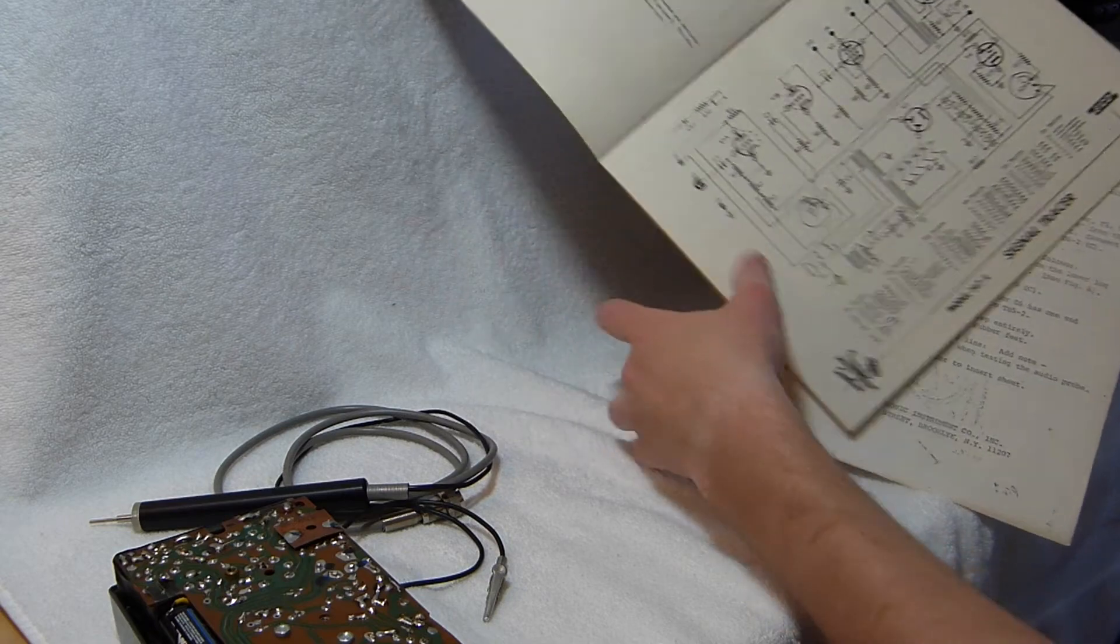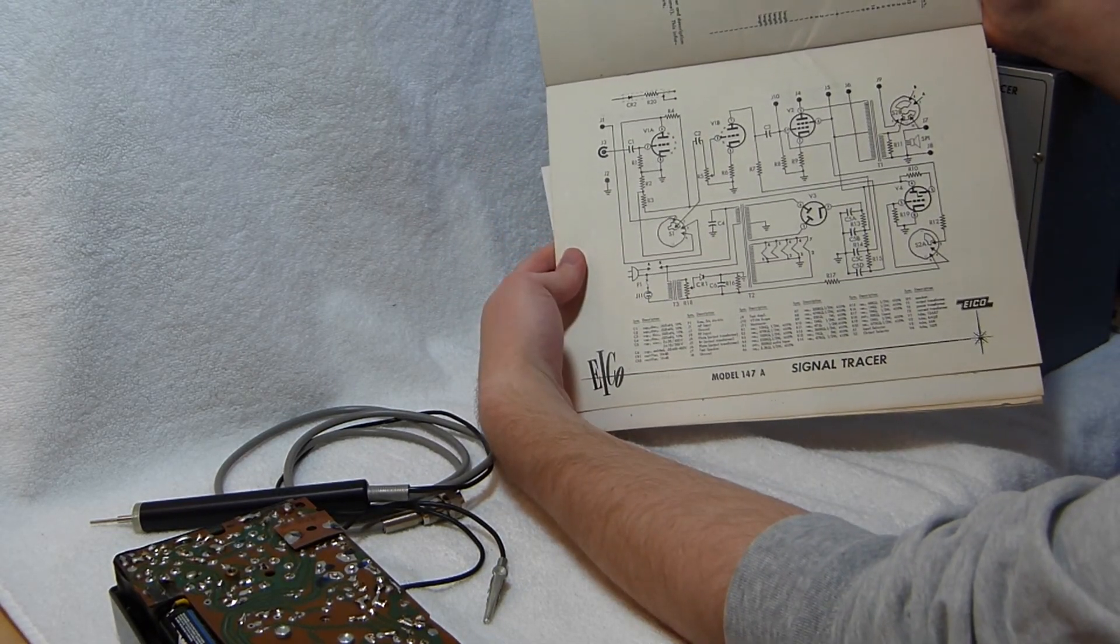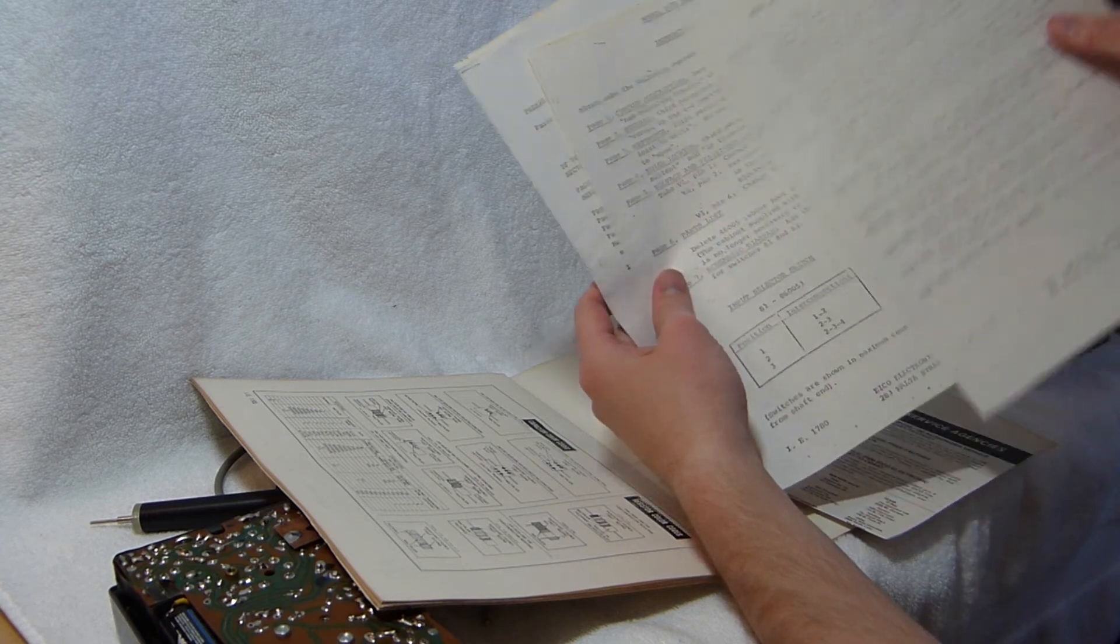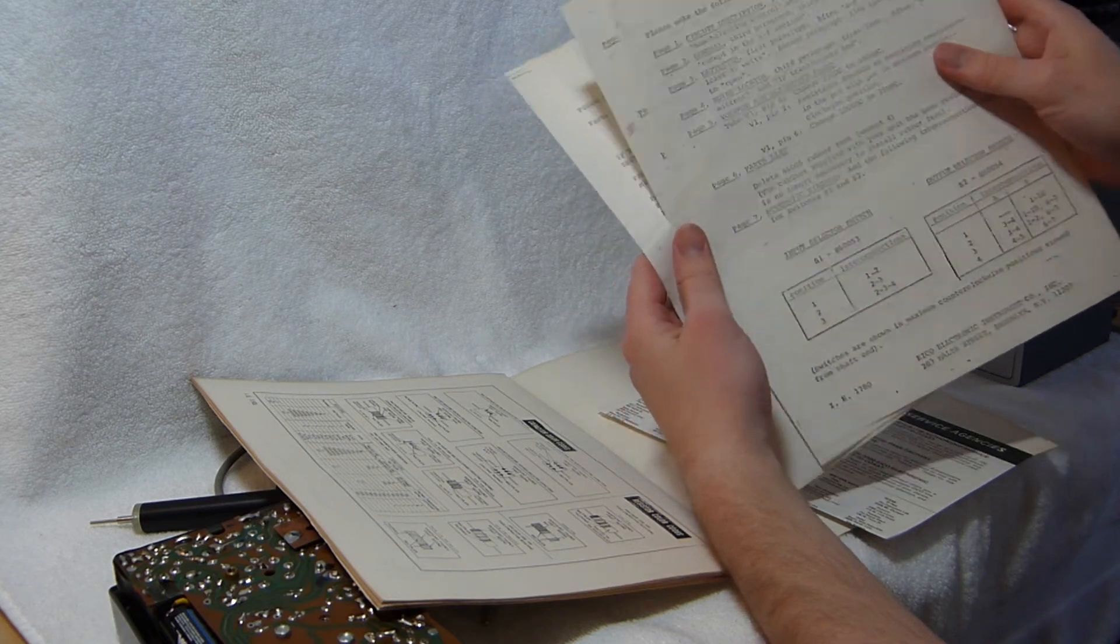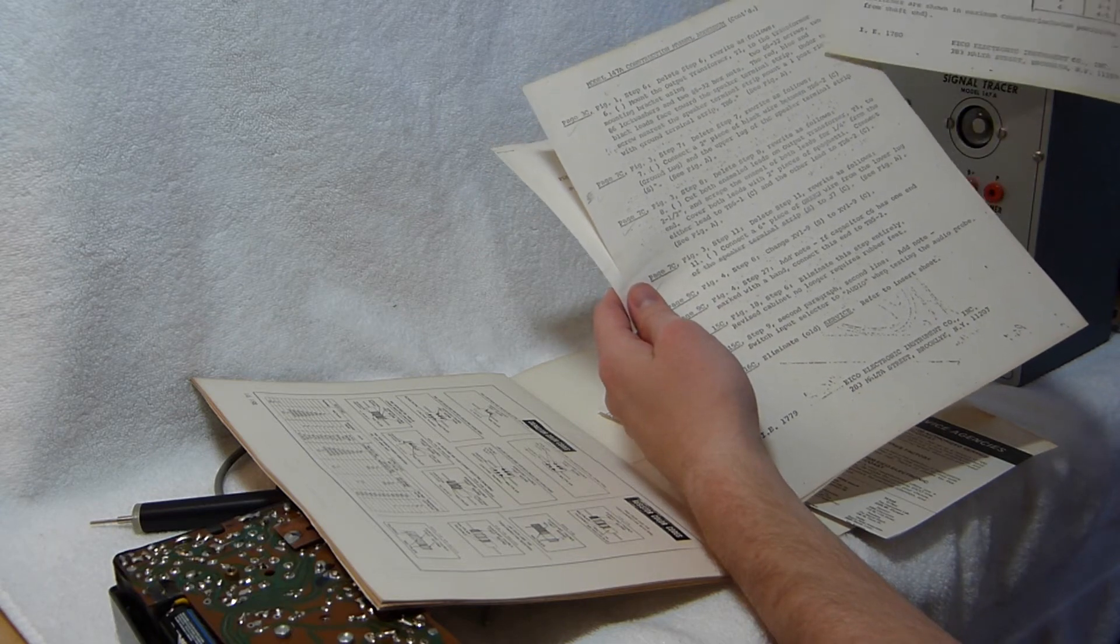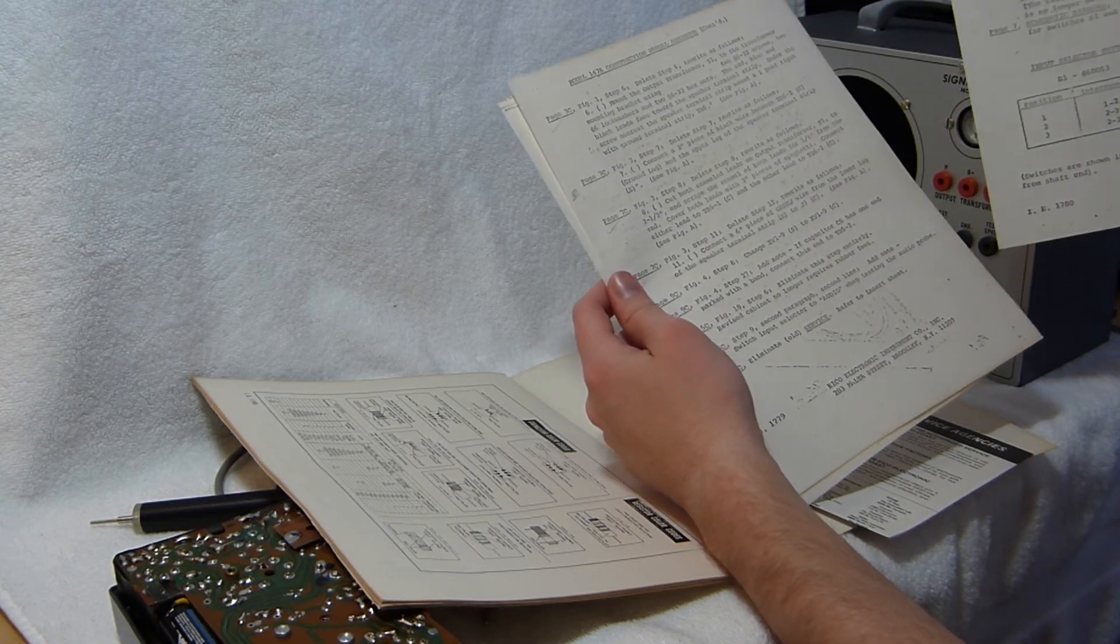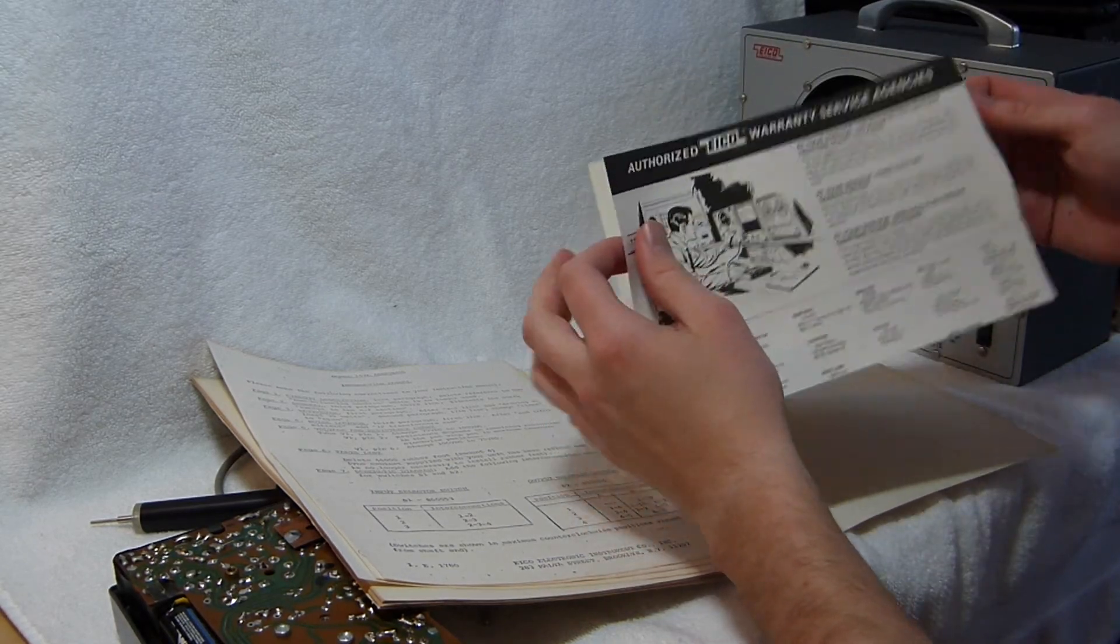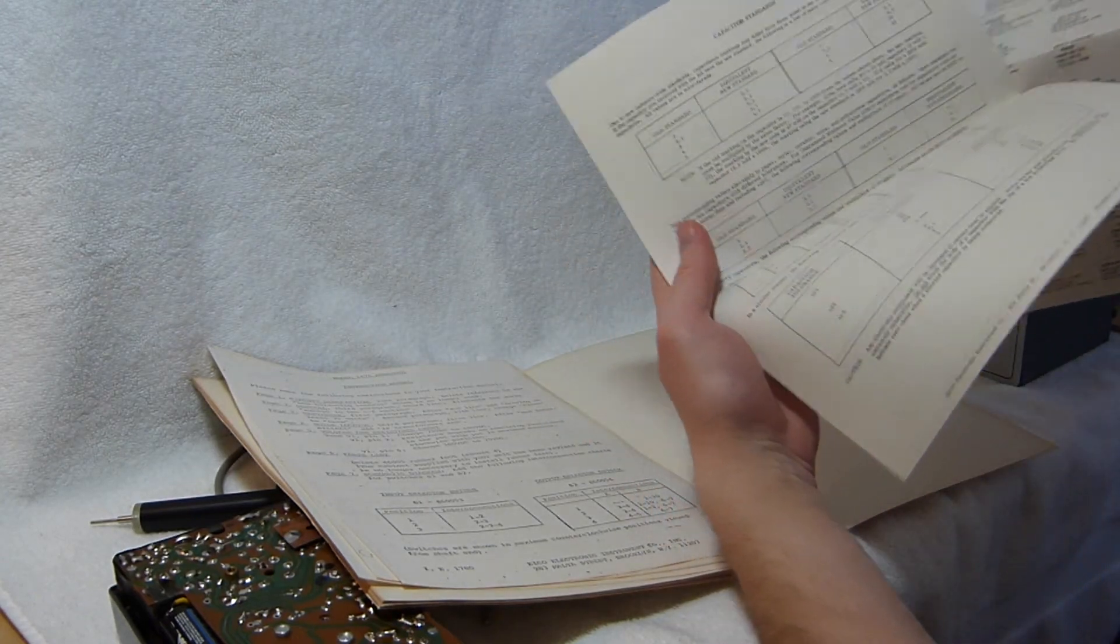There's the schematic of this thing. And then tucked into the back are the addendums. It's pretty crudely photocopied. Well, they're likely factory. There's a little guide on where the authorized service centers are, and reading resistor codes, capacitors.